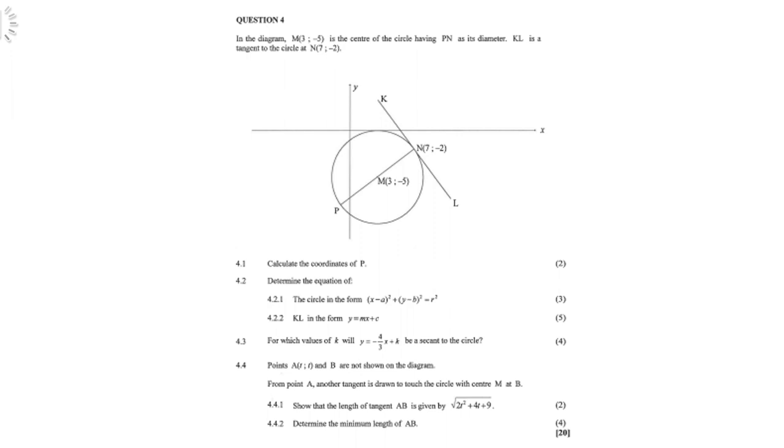Determine the equation of the circle in the form (X minus A) squared plus (Y minus B) squared equals R squared. KL in the form of Y equals MX plus C. For which values of K will Y equals negative 4 thirds X plus K be secant to the circle. Remember what is the secant? It cuts the circle in two places. Then points A and B are not shown in the diagrams. From point A, another tangent is drawn to touch the circle with center M at B. Show that the length of the tangent AB is given by the square root of 2T squared plus 4T plus 9, and determine the minimum length of AB.